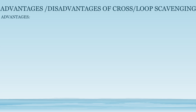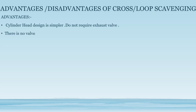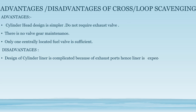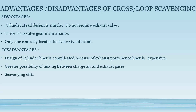Advantages of cross and loop scavenging: the cylinder head is simpler and does not require exhaust valves. There is no valve wear or maintenance, and only one centrally located fuel valve is sufficient. Disadvantages: the design of the cylinder liner is more complicated due to the exhaust ports, making the liner more expensive. There is also a greater possibility of mixing between air and exhaust gases, reducing scavenging efficiency.